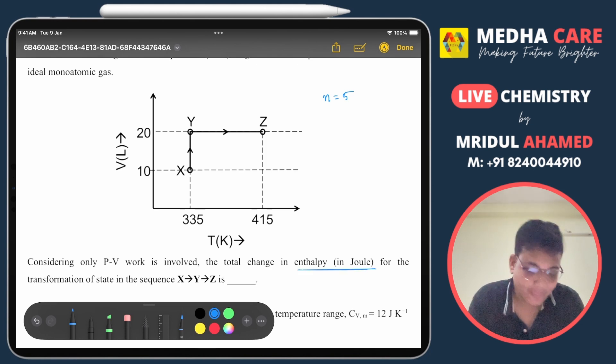So from the curve I will only use the temperature change. The delta T here is 415 minus 335 Kelvin, so that is 80 Kelvin.